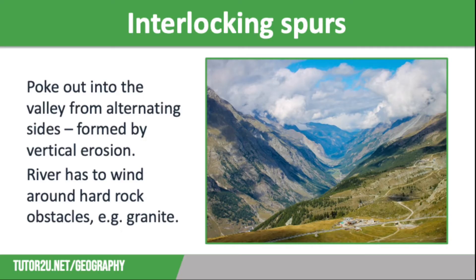The river has to take a winding path through the valley because of the hard rock obstacles. The river will go around these obstacles, which causes slopes to project into the valley from alternating sides, forming zip-like interlocking spurs, like you can see in the photograph on the screen.